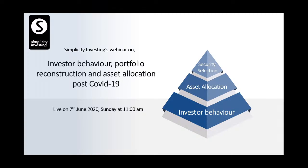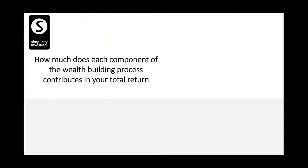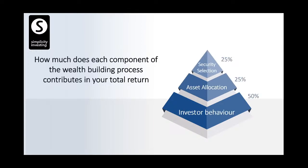We all live on the same earth but some are extremely happy and some are extremely unhappy — same thing happens in investments. How much does each component contribute to wealth building? Investor behavior — how you behave — is 50%, not the market. The market doesn't give you return; the return is given by how you behave during different phases of the market. Asset allocation contributes 25% and security selection another 25%.